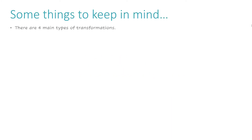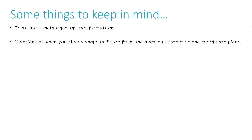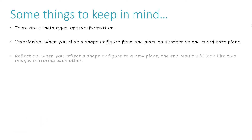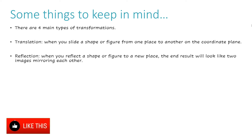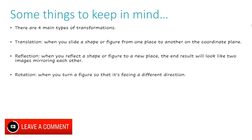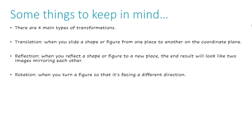Some things to keep in mind: there are four main types of transformations. A translation is when you slide a shape or figure from one place to another on the coordinate plane. A reflection is when you reflect a shape or figure to a new place — the end result will look like two images mirroring each other. A rotation is when you turn a figure so that it's facing a different direction. A dilation is when a figure is enlarged or shrunken to a smaller size.